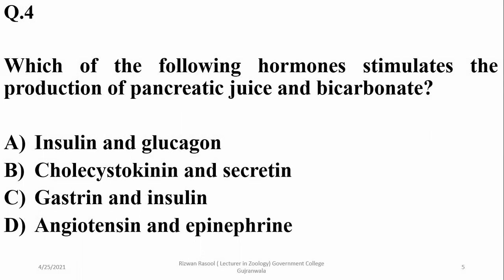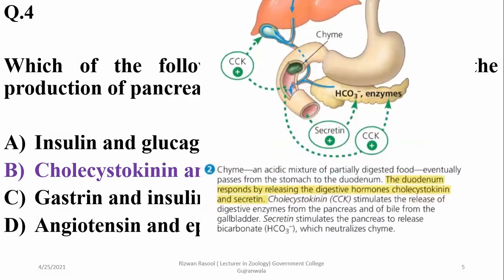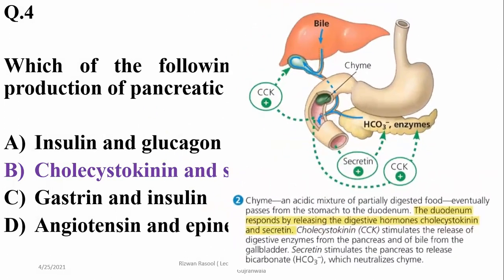Which of the following hormones stimulate the production of pancreatic juice and bicarbonate ions? It's cholecystokinin and secretin — so beta. The duodenum responds by releasing digestive hormones: cholecystokinin stimulates the release of digestive enzymes from the pancreas and bile from the gallbladder, while secretin stimulates the pancreas to release bicarbonate ions. So beta is the right option.